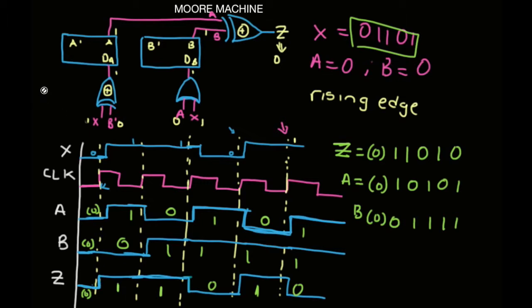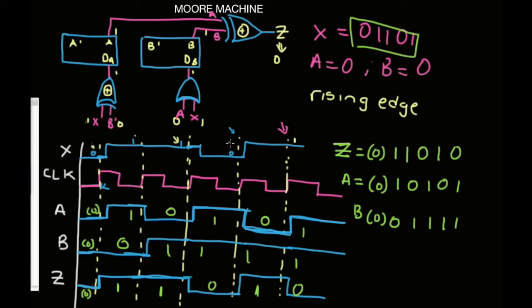The issue is that the first way we did it was using the Mealy machine. For the Mealy machine, the output is a function of the present state and the input. But this is a Moore machine — the output is a function of the present state only. So X is not needed in this problem. The X value has been preset as 0, 1, 1, 0, 1. This is the sequence the machine will follow. When A and B is 0, your Z is 0, because we are not looking at the X value. This is a Moore machine.